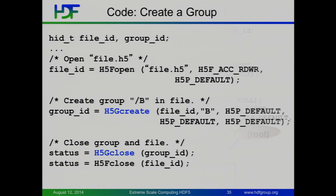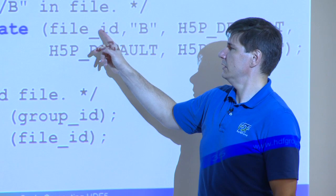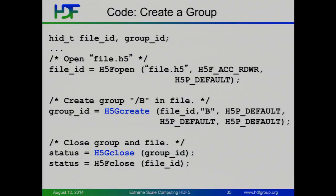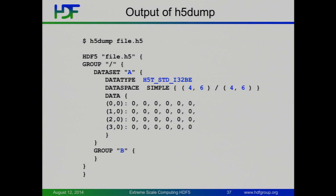A similar idea for groups — if you want to create more hierarchy in the file, we're going to create a group called 'B' off the root group, because we're using the file ID as its parent. If you want to create a dataset inside this group, you'd pass in the group ID instead of the file ID as the parent of the dataset, and you'd have slash B slash A. This is what the file looks like at the end if we ran both of those programs. And if you used h5dump to dump that out, here's what the tool would tell you in a nice little text output: the file has a dataset in it, it's 32-bit IEEE big-endian data, 2D data space, maximum dimensions same as current, and since you didn't write any data to it, it's all zeroes.